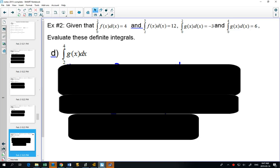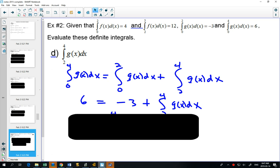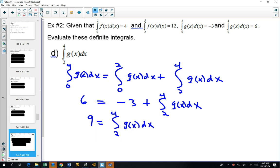2 to 4, we're not given, but we have 0 to 4 and we have 0 to 2. So 0 to 4 should equal 0 to 2 plus 2 to 4. You can plug in numbers for the ones that you know, and just rearrange this to find out that from 2 to 4 would be 9.